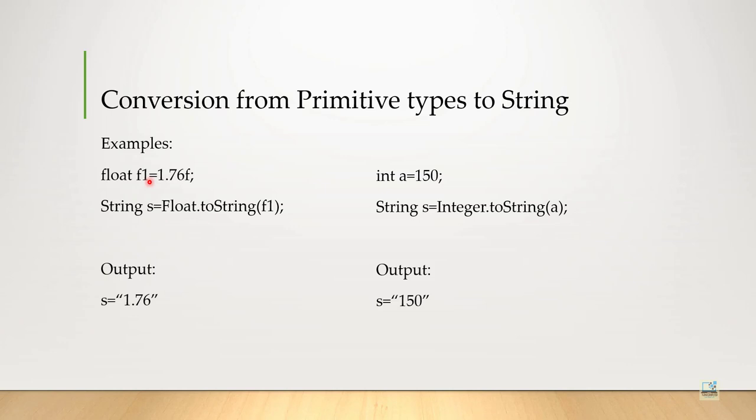That is why we have to write f. Anyway, so, I was explaining that the float variable f1 is containing 1.76f as a float value and we are passing that variable to the method toString.